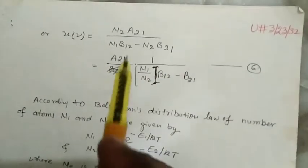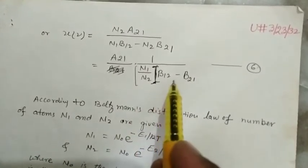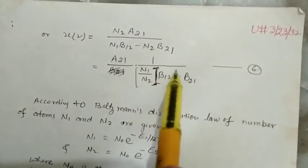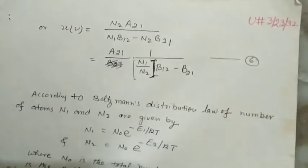Or, A21/[(N1/N2)·B12 - B21]. Here we divide numerator and denominator by N2. This is equation number 6.